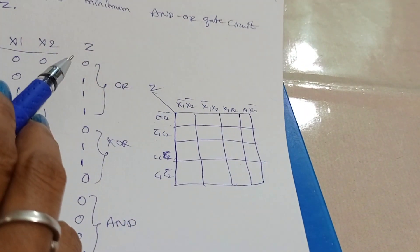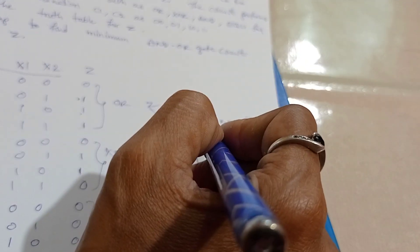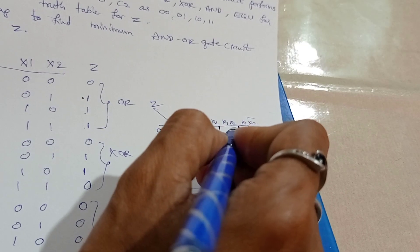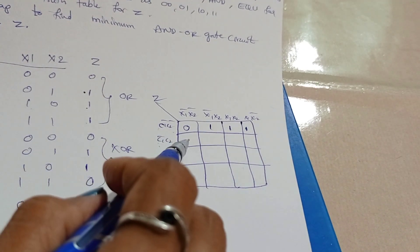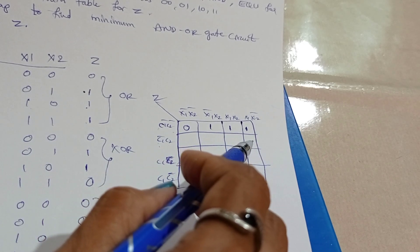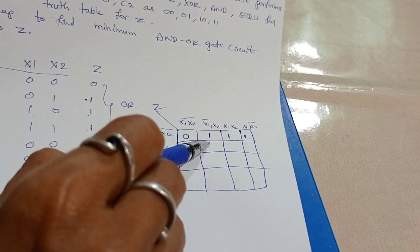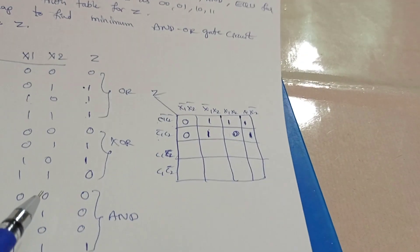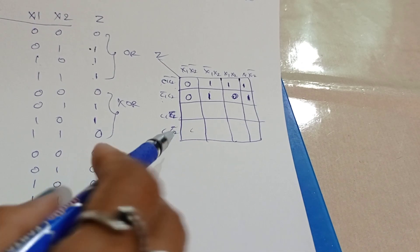Now we fill the K-map. For C1C2=00 (OR operation), the row is filled: 0, 1, 1, 1. For C1C2=01 (XOR), the values are 0, 1, 1, 0 — since same inputs give 0 and different inputs give 1. The row is: 0, 1, 1, 0.